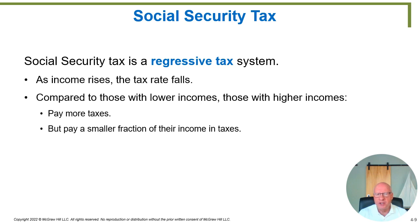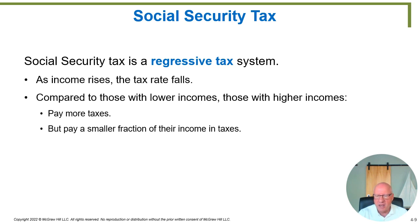The Social Security tax is a regressive tax, meaning as income rises, tax rates fall. Once your income goes above a certain amount — around $96,000 — you no longer pay any further Social Security tax. So if you make half a million dollars a year, you only pay Social Security tax on the first $96,000. Your Social Security tax as a percentage of your entire $500,000 income would be lower than for a worker making only up to $96,000, who pays Social Security tax on everything they earn.